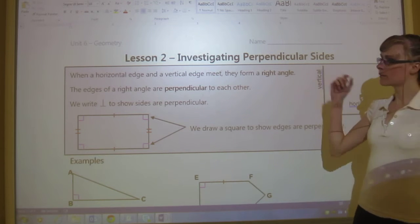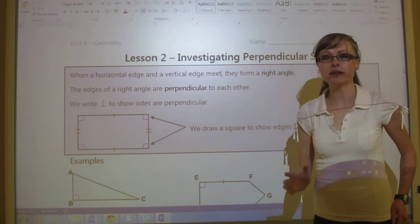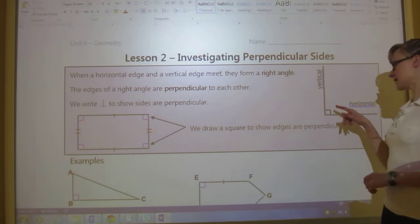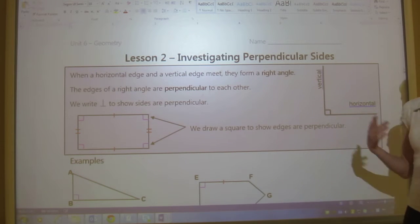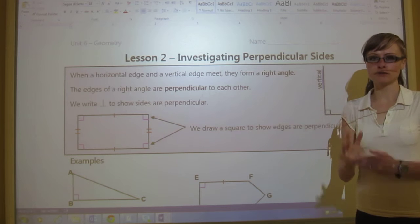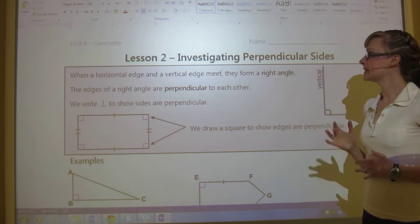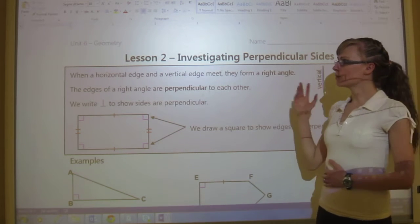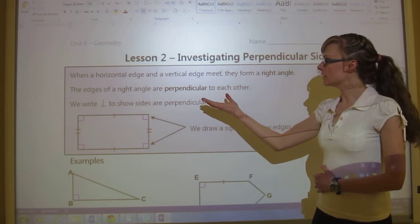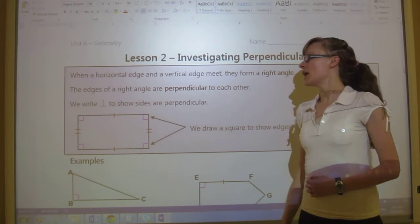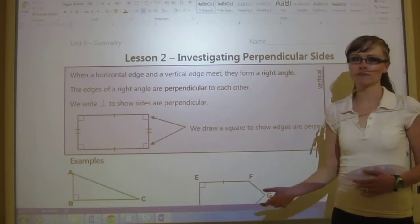You'll be learning a lot about right angles in the future as well. But just know that the angle that a square has or a rectangle, where those corners are, that's a right angle. And those edges of the right angle are perpendicular to each other.